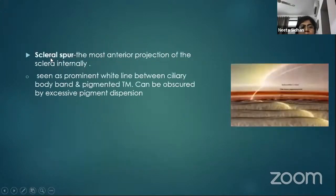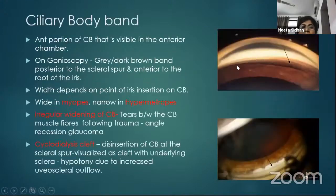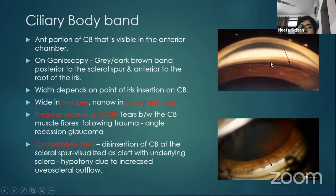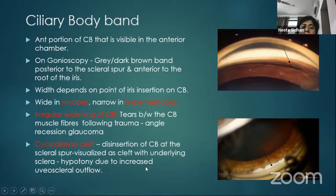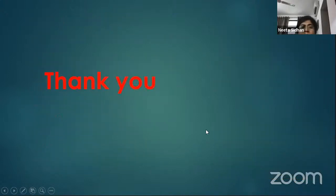The scleral spur is seen as a prominent white line between the ciliary body band and the trabecular meshwork. Posteriormost is the ciliary body band, seen as a gray or dark band on gonioscopy; its width depends on the point of iris insertion — wide in myopes and narrow in hypermetropes. Irregular widening occurs due to tears between ciliary body muscle fibers following traumatic angle recession. A cyclodialysis cleft occurs due to disinsertion of the ciliary body at the scleral spur, visualized as a cleft with underlying sclera visible, often leading to hypotony due to increased uveoscleral outflow. This concludes the presentation on lens anatomy and anterior chamber angle structures.